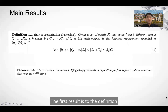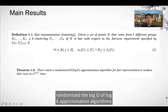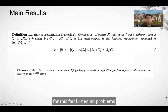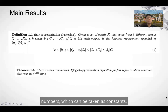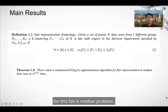We have two main results. The first result concerns the relaxed fairness definition. In this case, we can show a randomized O(log k) approximation algorithm for the fair k-median problem, which runs in n^{O(L)} time. Note that in practice, k and L are usually very small numbers that can be treated as constants, and so our algorithm gives the first constant-factor approximation algorithm for the fair k-median problem.